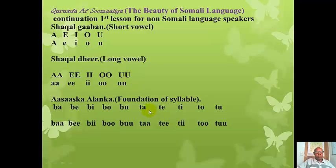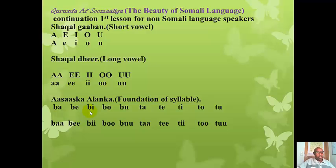Now one of the foundations of a syllable — in Somali we call it 'aram.' If you can see the combination of a consonant and a vowel, that is a syllable in Somali. That first example was a short vowel with a consonant — the first two consonants in the Somali alphabet. Now I'm taking the same consonants with a long vowel. Please concentrate and follow me.